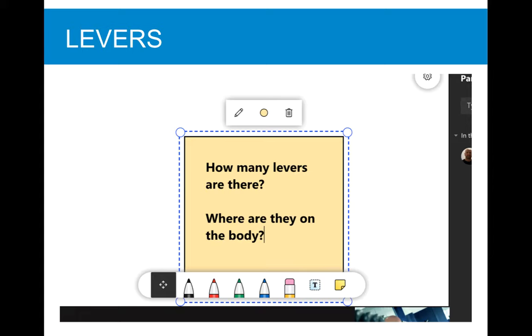Something as simple as getting the students involved and interacting straight away with something like how many levers are there and where are they on the body? I have an A-level PE lesson first thing on a Monday morning, and they really do need a bit of a jumpstart at times. To get them involved and interacting and engaging first thing in the lesson on a Monday is often a good thing to get them on task and focused on what we need to be doing.